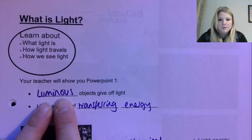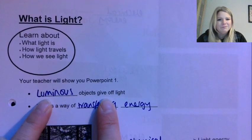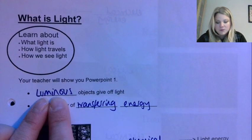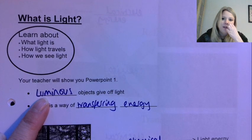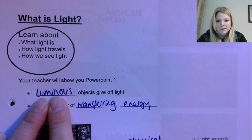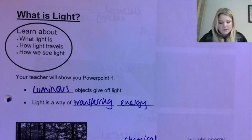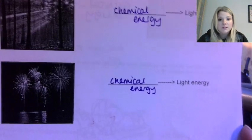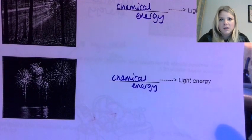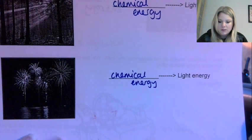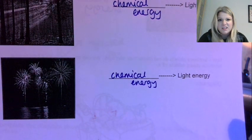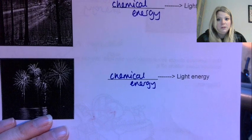So first of all we were just making sure we knew what type of objects give off light. Anything that produces its own light we would describe as being luminous, and then light is just a way of transferring energy. This is on page 49 by the way in your notes, so if you have your notes open with me then you can fill in anything that is maybe missing or just follow along.